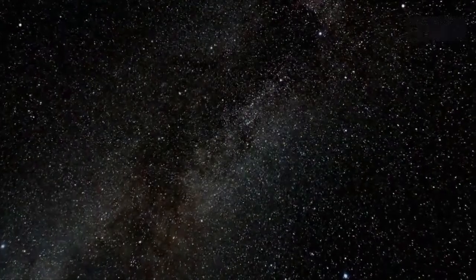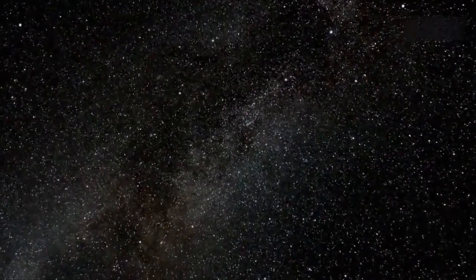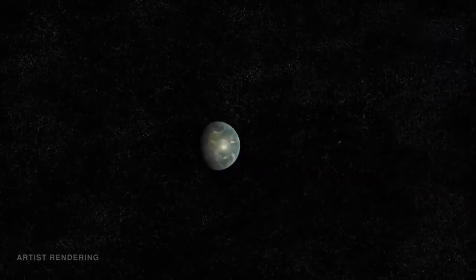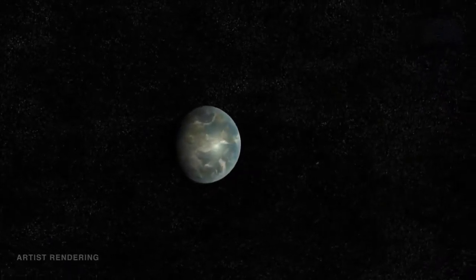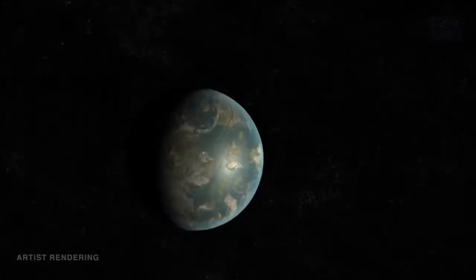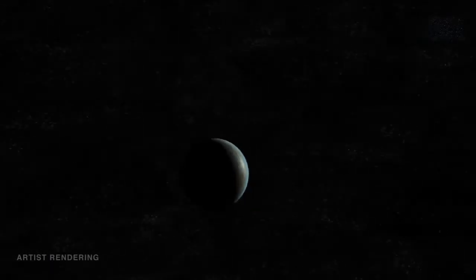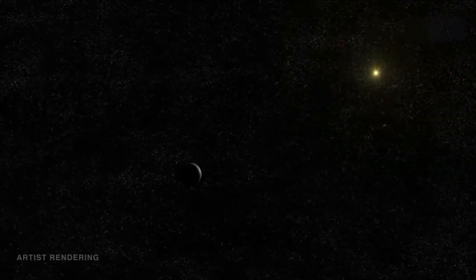Kepler has just found the closest analog to the Earth-Sun system. In July 2015, NASA announced the discovery of Kepler-452b, an exoplanet a little over one and a half times wider than Earth, orbiting a G2-type star similar to our own Sun.